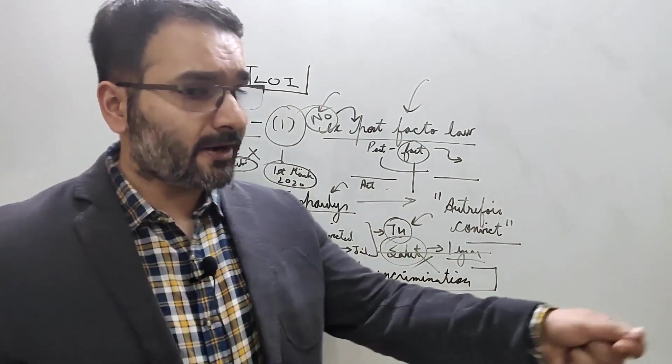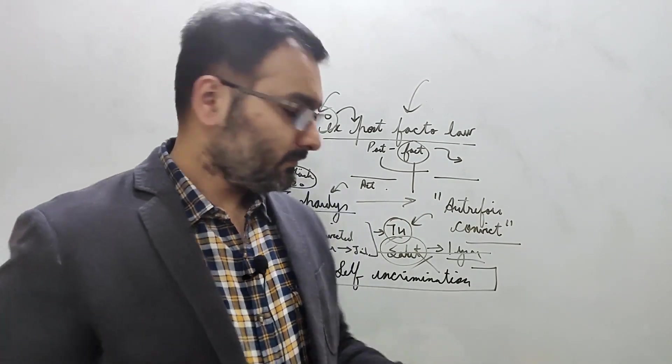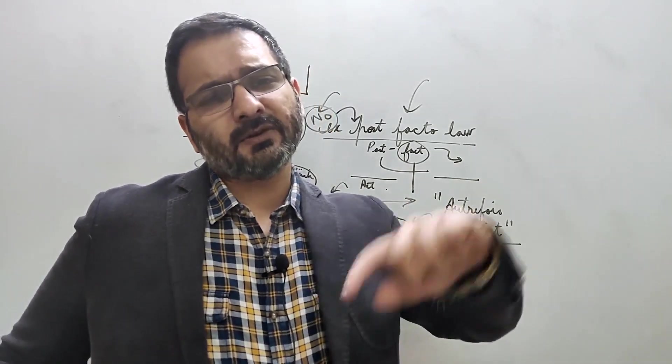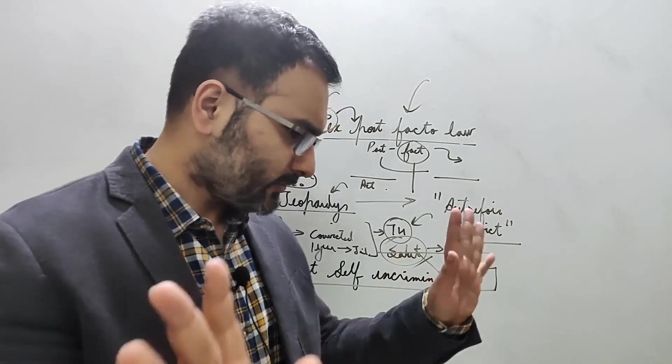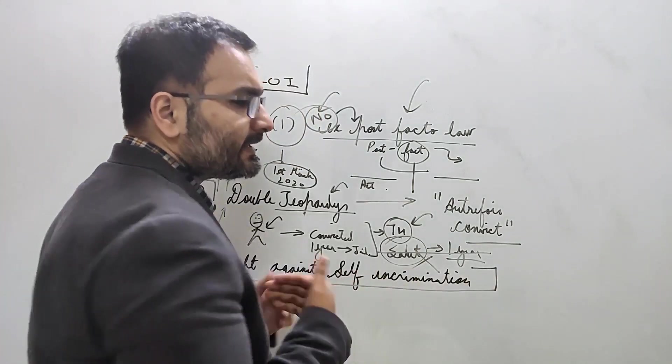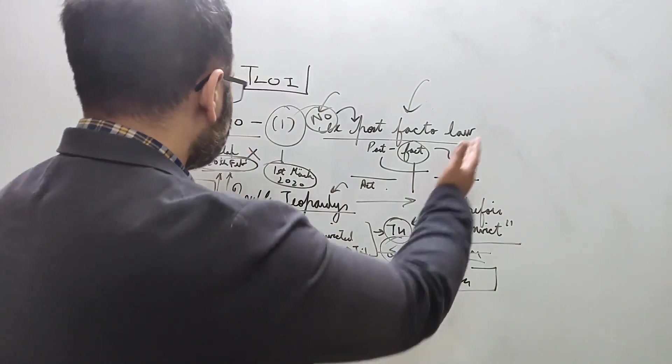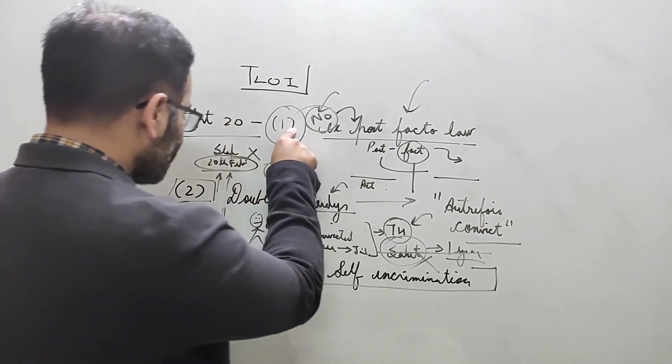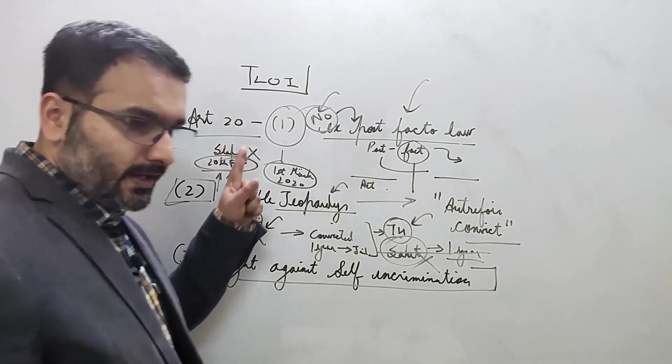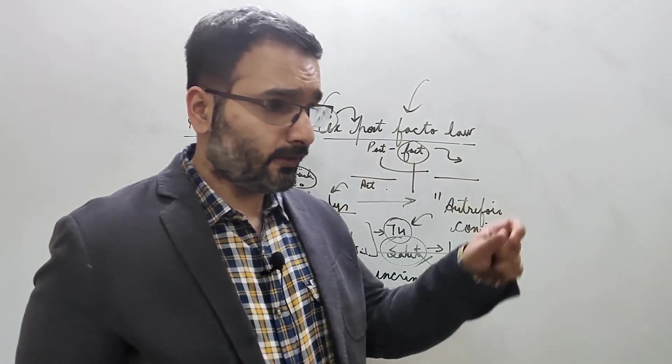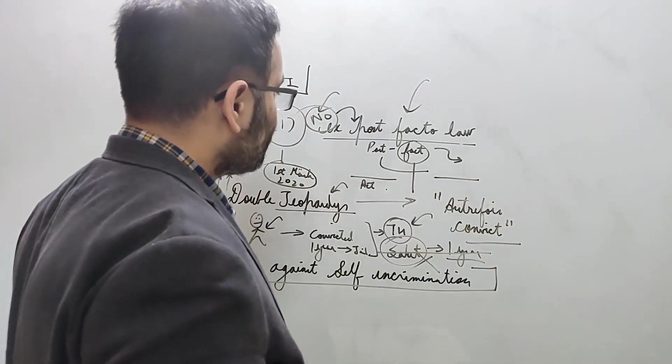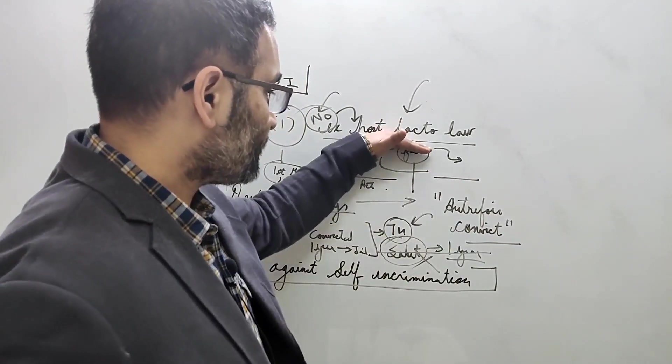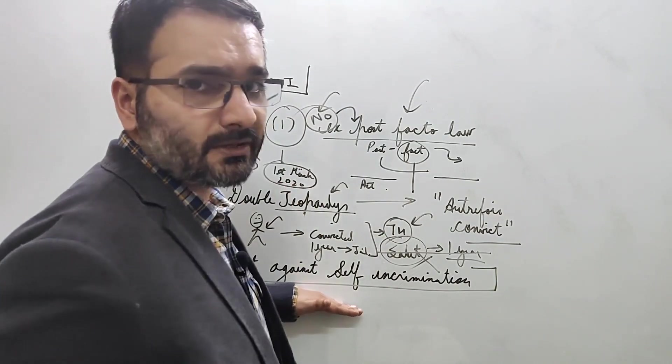Then you have a right against incriminating yourself in a criminal matter. This is the core crux of Article 20. Then all these options are given to you. You need to remember the order: ex post facto law, double jeopardy, right against self-incrimination. Simple.